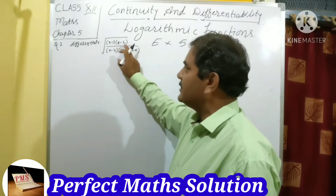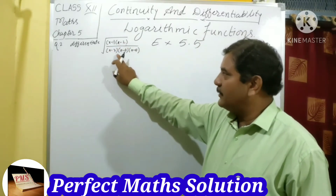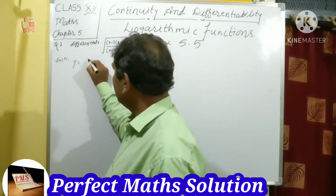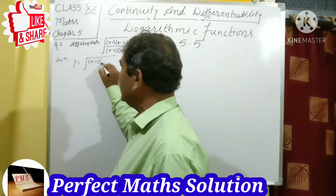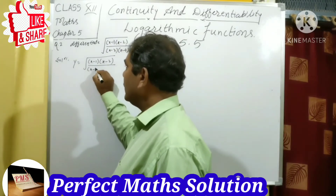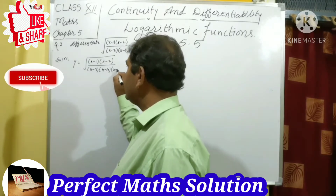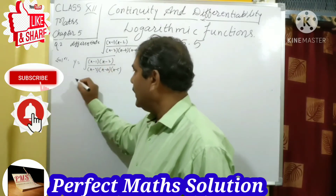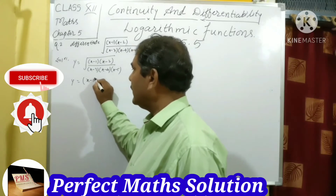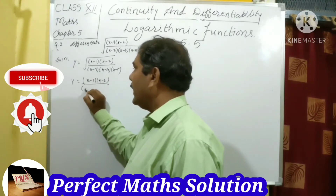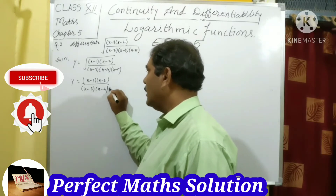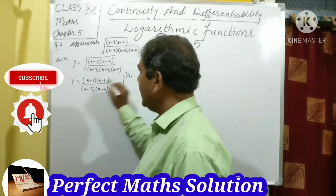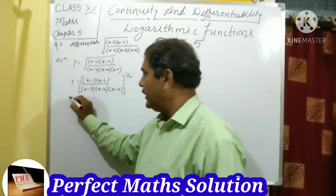Question number 2: differentiate √[(x−1)(x−2) / ((x−3)(x−4)(x−5))]. Taking the solution: y equals √[(x−1)(x−2) / ((x−3)(x−4)(x−5))]. Convert the square root to power form: y equals [(x−1)(x−2) / ((x−3)(x−4)(x−5))]^(1/2). Now take log on both sides.